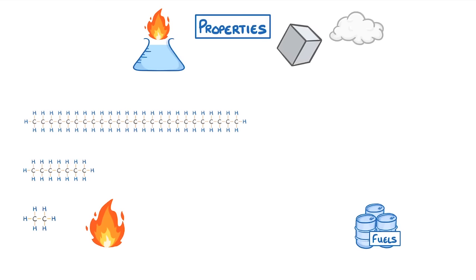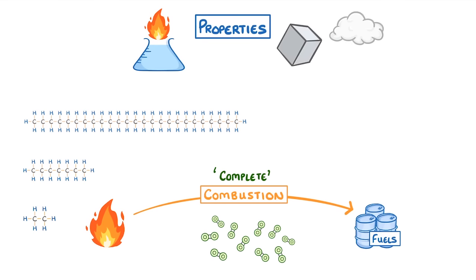And whenever we use a hydrocarbon as a fuel, we call the process combustion, with complete combustion only taking place if there's enough oxygen available, which will produce carbon dioxide and water, releasing loads of energy in the process.